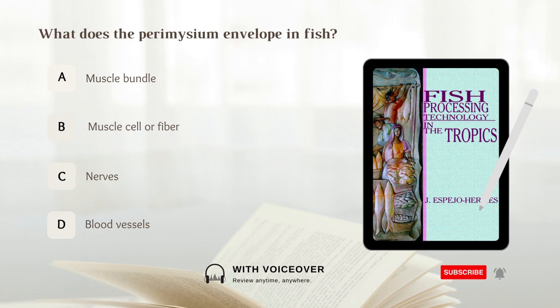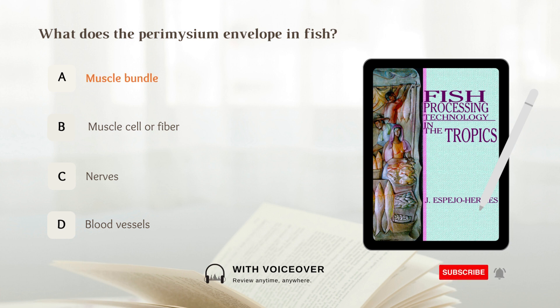What does the perimysium envelope in fish? A. Muscle bundle, B. Muscle cell or fiber, C. Nerves, D. Blood vessels. Answer: A. Muscle bundle. The perimysium envelopes the muscle bundle in fish.